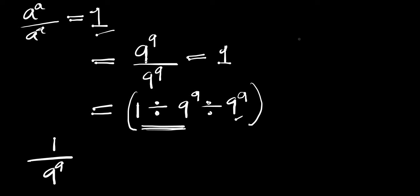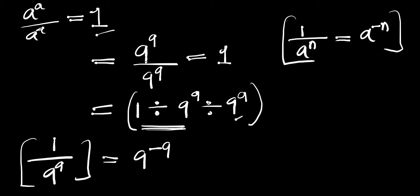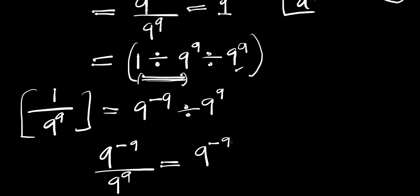Now let's consider this identity: if you have 1 divided by a to the power of n, this equals a to the power of negative n. So we apply this identity right here, and this equals 9 to the power of negative 9. So these first two terms give 9 to the power of negative 9, and we have divided by 9 to the power of 9. So 9 to the power of negative 9 divided by 9 to the power of 9 equals 9 to the power of negative 9 minus 9, which equals 9 to the power of negative 18.